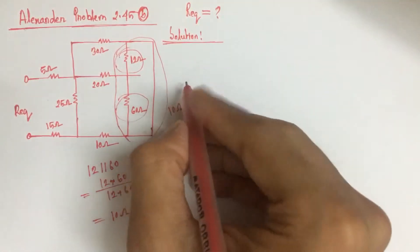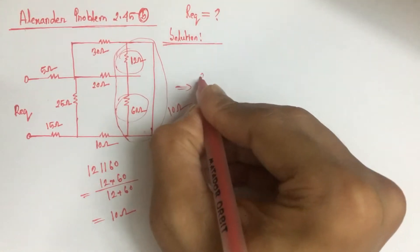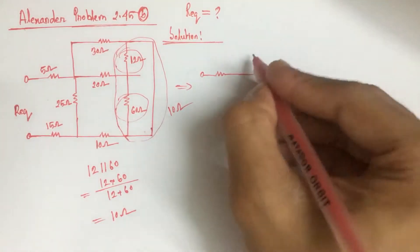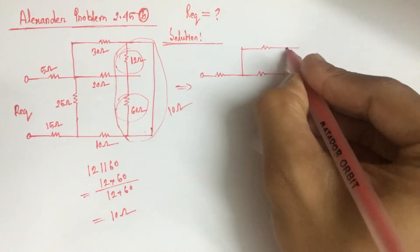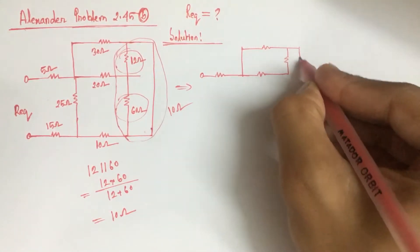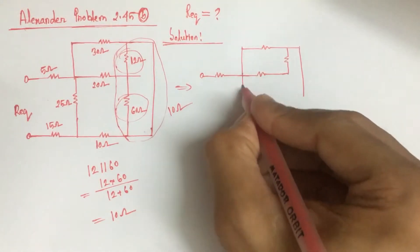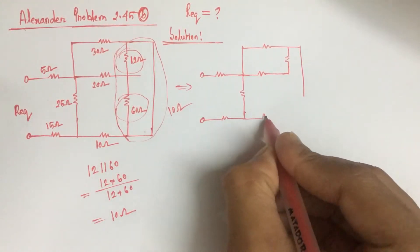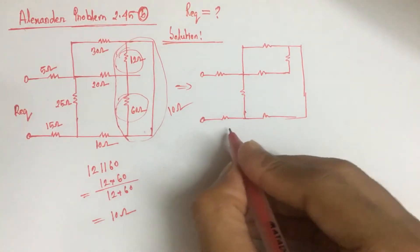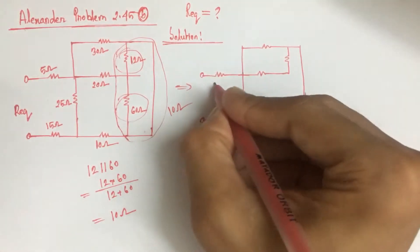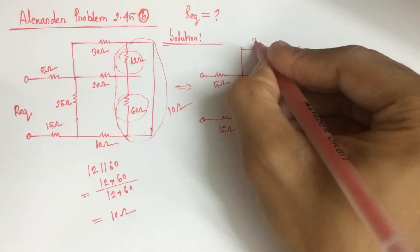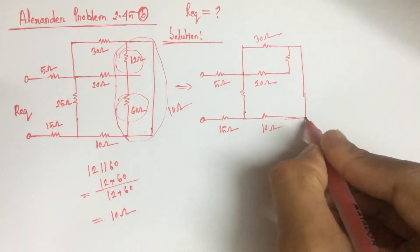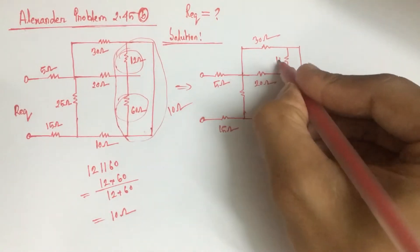Now, if we simplify the circuit, we have 10 ohm, 5 ohm, 30 ohm, 20 ohm, 10 ohm, and 15 ohm. The value of this last resistance is also 10 ohm.